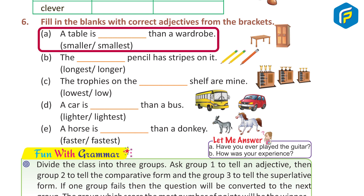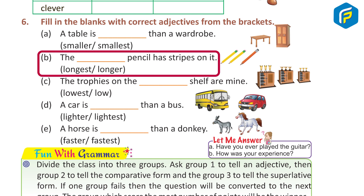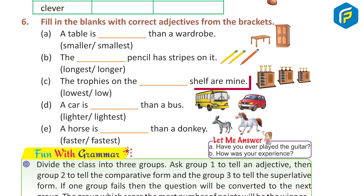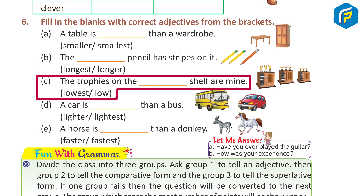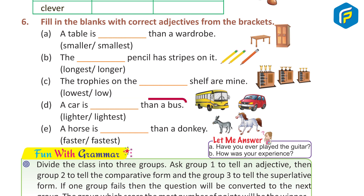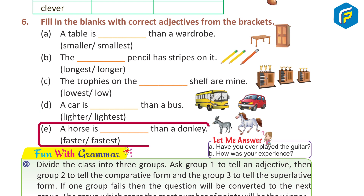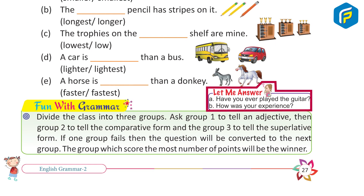D. A table is smaller than a wardrobe. B. The longest pencil has strips on it. C. The trophies on the lower shelf are mine. D. A car is lighter than a bus. E. A horse is faster than a donkey.